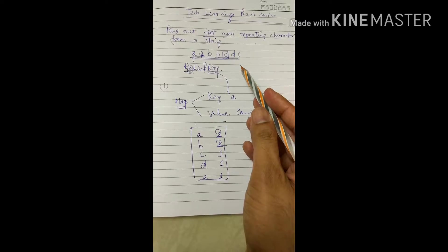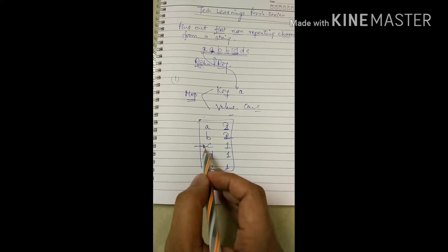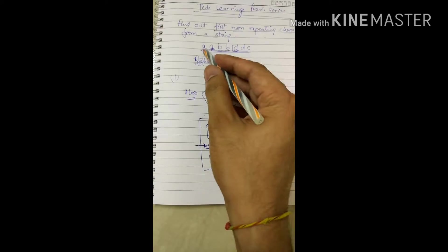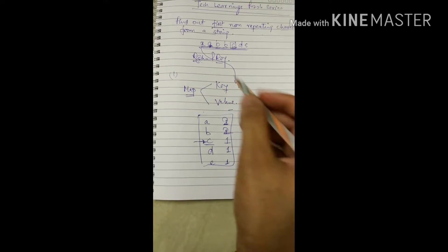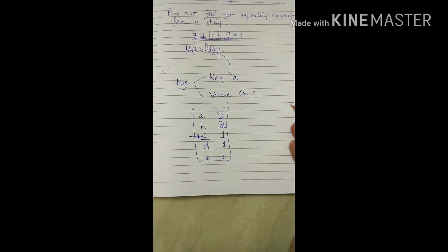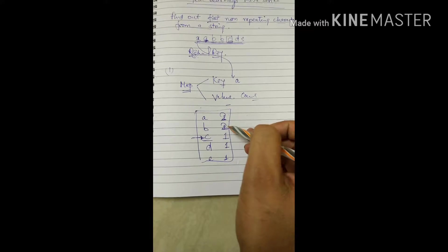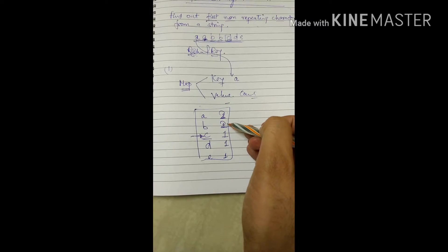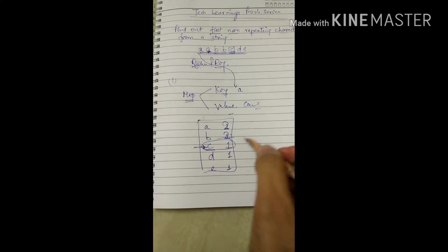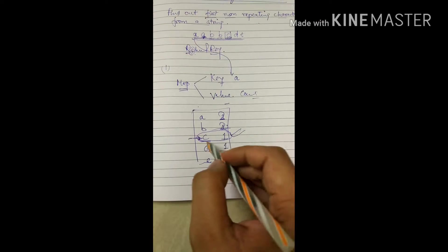Our solution is 'c'. To get to this character, scan the string once more and look up each character's count in the map. 'a' has count two — continue. 'b' has count two — continue. 'c' has count one. As soon as we get count one, that is the character we were looking for. So 'c' is the first non-repeating character.